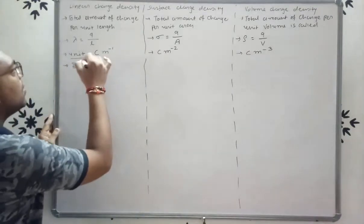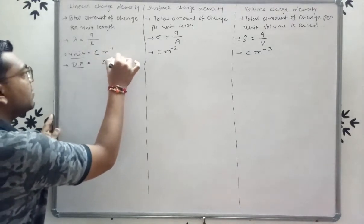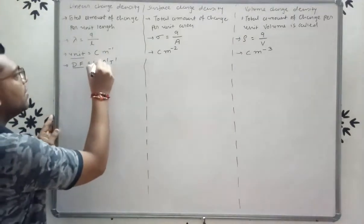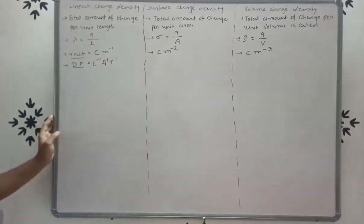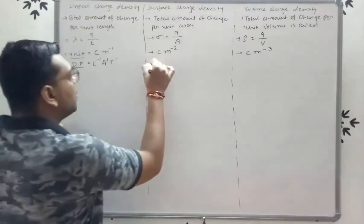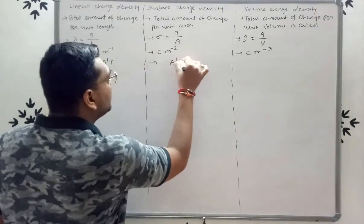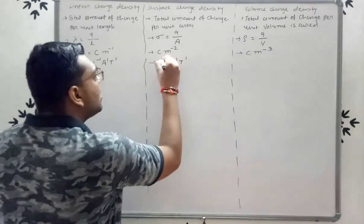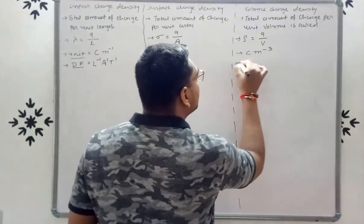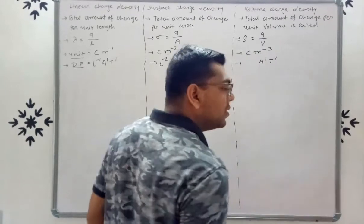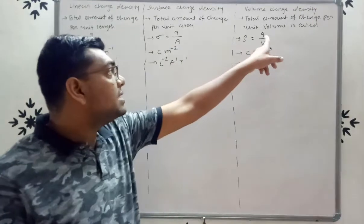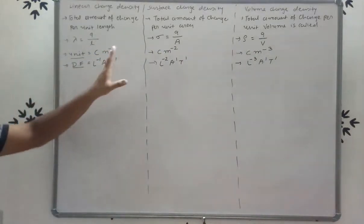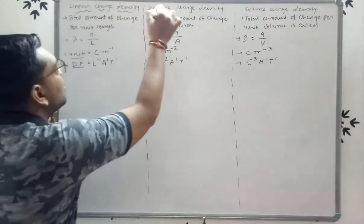For the dimensional formula: the dimensional formula of charge is A¹T¹, and length is L¹ in the denominator, so the dimensional formula of linear charge density is A¹T¹L⁻¹. For surface charge density, area has dimension L², so it is A¹T¹L⁻². These are the units and dimensional formulas for linear, surface, and volume charge density.